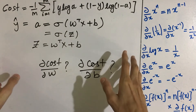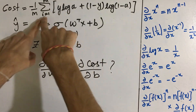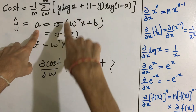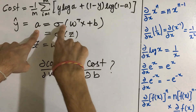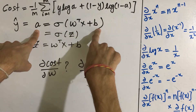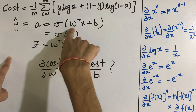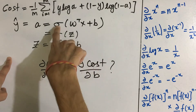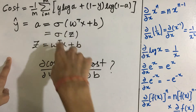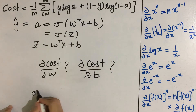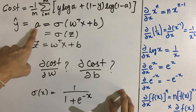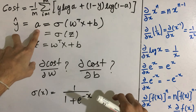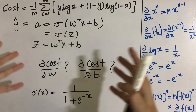The formula for the cost function in logistic regression is given by this, where a are our predictions, which is given by sigmoid of w-transpose x plus b. Here w and b are our parameters, x is our input feature, and sigma is our sigmoid function, which looks something like this. Sometimes a is also represented by y-hat, but I am representing it here with a for better notation.